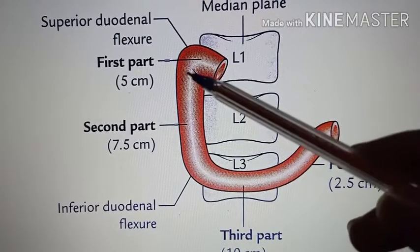The common hepato-pancreatic duct, which is formed by the union of the bile duct as well as the main pancreatic duct, opens into the major duodenal papillae present in the second part of the duodenum. The accessory pancreatic duct opens into the minor duodenal papillae, also present in the second part of the duodenum.